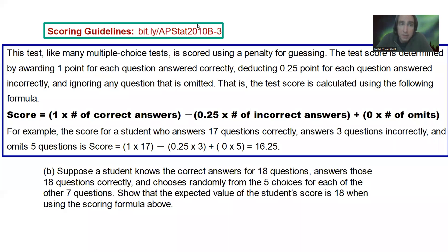Part B. This test, like many multiple choice tests, has used scoring a penalty for guessing. The test score is determined by awarding one point for each question answered correctly, deducting 0.25 point for each question answered incorrectly, and ignoring any question that is omitted. That is, the test score is calculated using the following formula. Score equals one times the number of correct answers, minus 0.25 times the number of incorrect answers, plus zero times the number of omits.